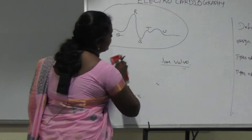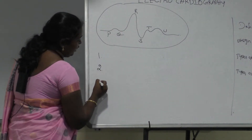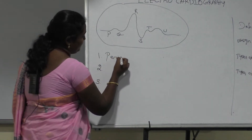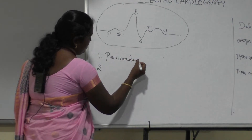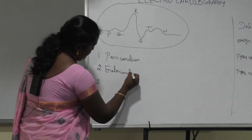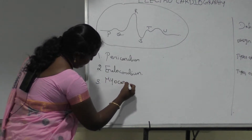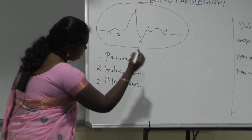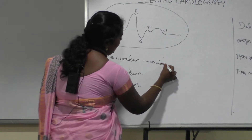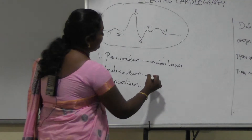Next, we discuss the types of layers. The heart has three types of layers. The first one is the pericardium, which is the outer layer of the heart. The second one is the endocardium, which is the inner layer of the heart. The third one is the myocardium.